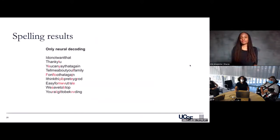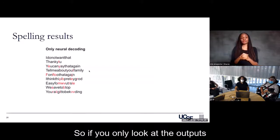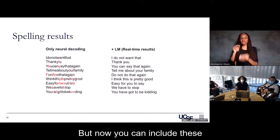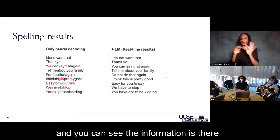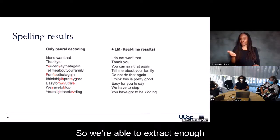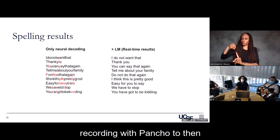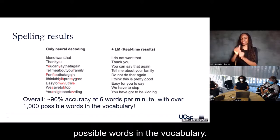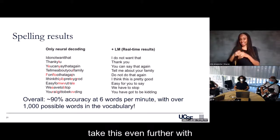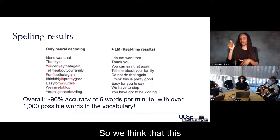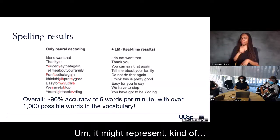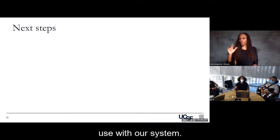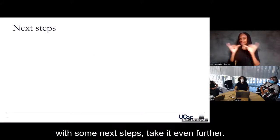If you only look at the outputs of the neural models, you get a lot of jumble with no spaces. But including advanced language models, we're able to extract enough from the signals to get about 90% accuracy at six words per minute, now with over a thousand possible words in the vocabulary. We've seen this can scale to even larger vocabulary sizes. We think this approach meets the minimum threshold of what we'd want someone to be able to use with our system, and hopefully we can take it further with next steps.